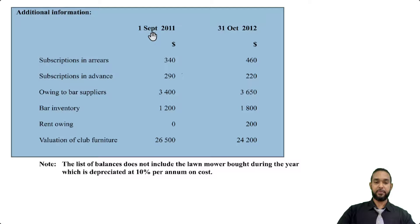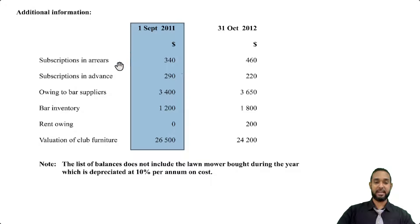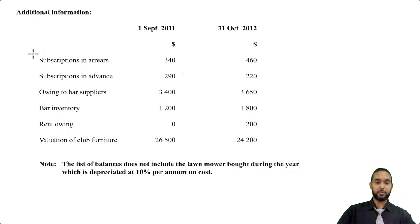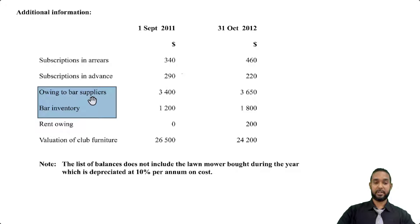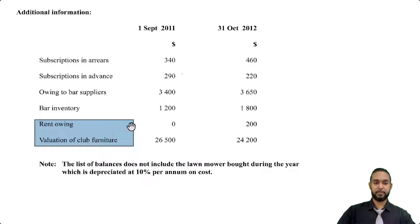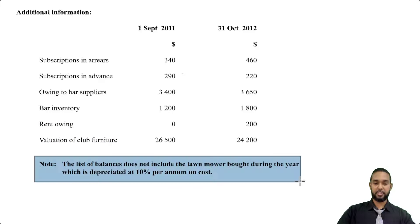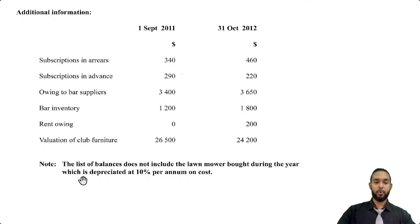We have two columns: one for 1st September 2011 with opening balances, and one for 31st October 2012 with closing balances. Items include subscriptions in arrears and in advance — subscriptions is a revenue item, so revenue owing is an asset and revenue prepaid is a liability. We also have owing to bar suppliers and bar inventory. Rent owing has no opening balance, just a closing balance. Valuation of club furniture is $26,500 opening and $24,200 closing. A note states the list of balances does not include the lawn mower bought during the year, which is depreciated at 10% per annum on cost.